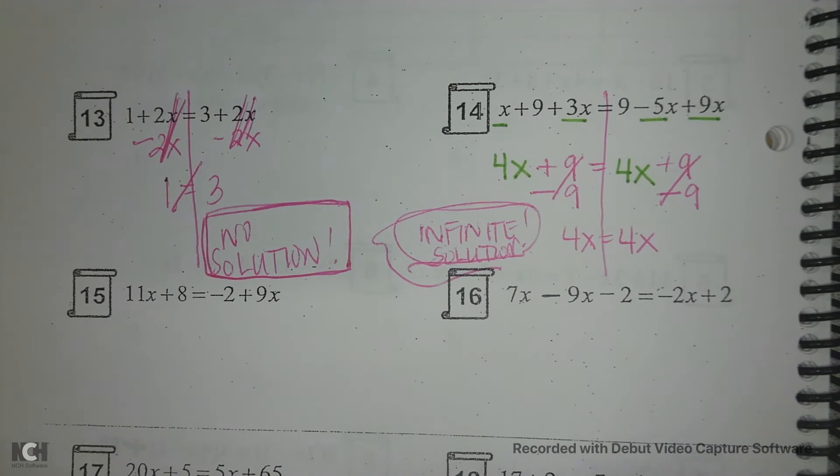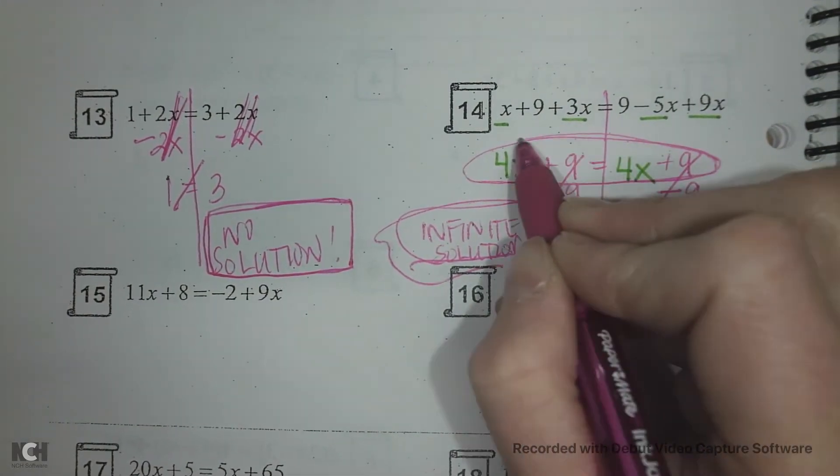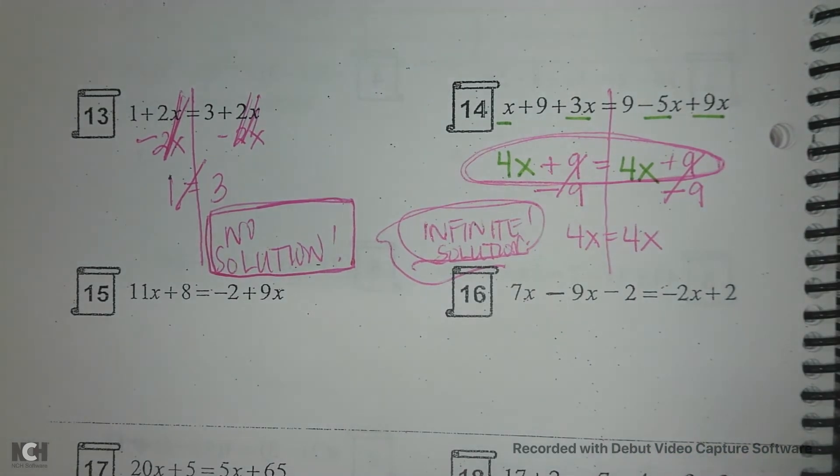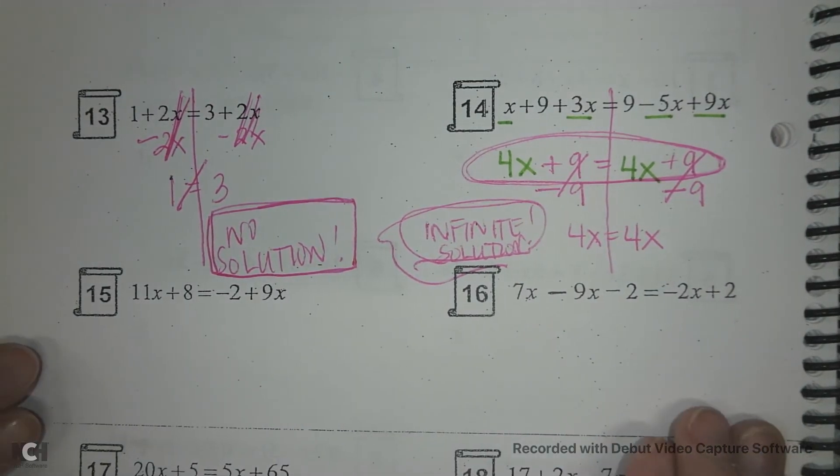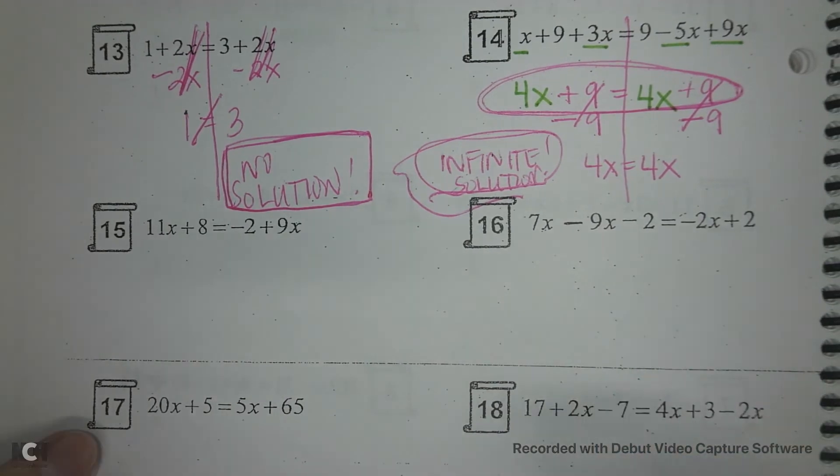But as long as the left side and the right side are equal, then it's an infinite solution. Like you could have even stopped here. Notice I have 4x plus 9 equals 4x plus 9. They're equal. On number 15. Oh, sorry. I don't have to move my paper. Let's try this one.